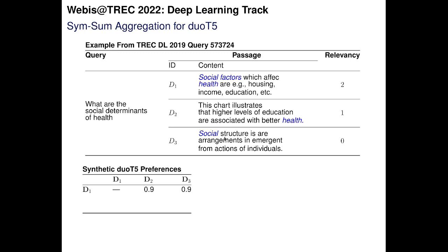Duo T5 predicts all the pairwise preferences, building a matrix of pairwise preferences. For example, this matrix contains something like: document D1 is more relevant to the query than document D2 with a probability of 90%.